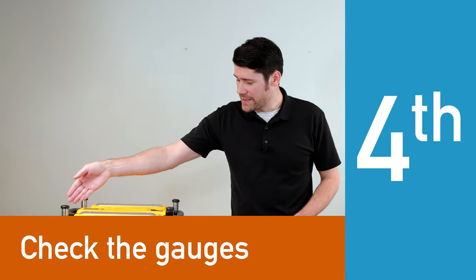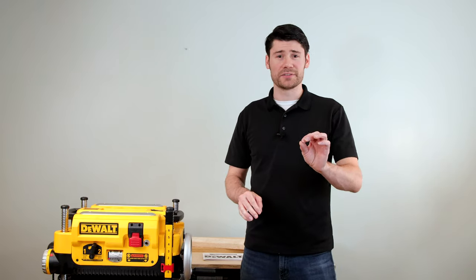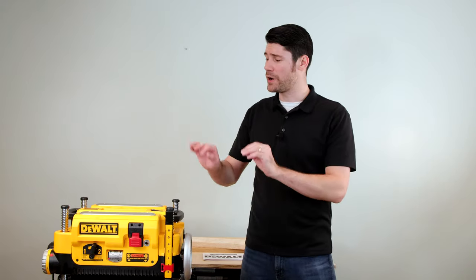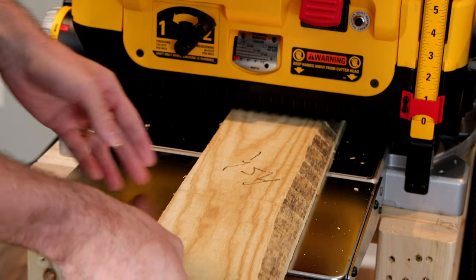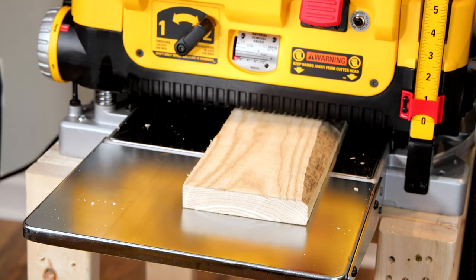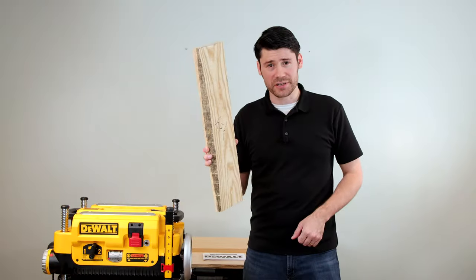Number four, check the depth stop and thickness gauge and make sure that they're set correctly. Chances are they're perfect from the factory and require no adjustments, but it's easy enough to take a scrap piece of wood and run it through and make sure that everything's adjusted correctly.